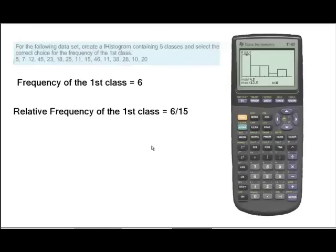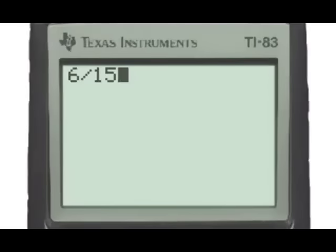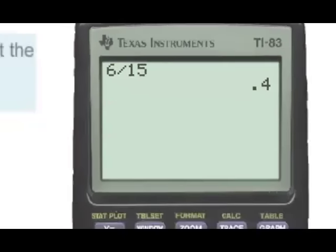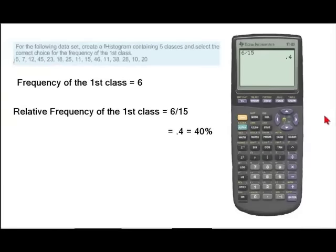To find the relative frequency of the first class, we'll take the frequency of the first class and divide by the total number of data points in our sample, which is 15. The relative frequency then will be the 6 divided by 15, which is 0.4, so that the relative frequency of the first class as a percent is 40%.